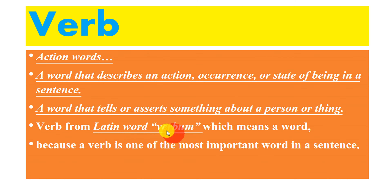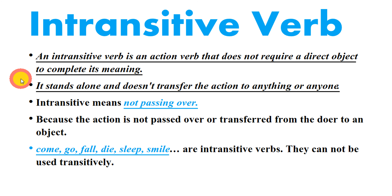For example: the boy cut his hand with a knife; the policeman blew his whistle; the chef cooked a delicious meal; the company launched a new product; she wrote a letter; they ate pizza. So these are all examples of transitive verbs.